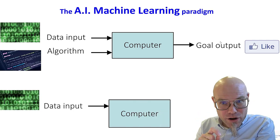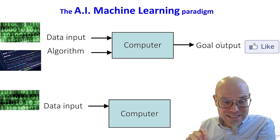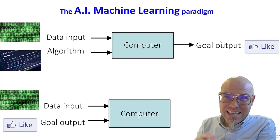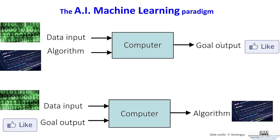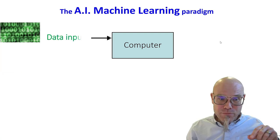Now, what the machine learning paradigm does, it turns that on its head, it has its data and the goal output, and then it asks the computer to compute the best recipe. Now, let me break that down.